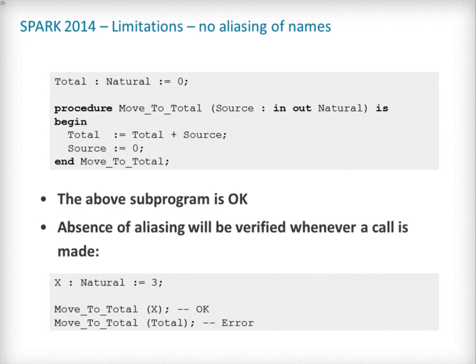The example subprogram move_to_total increases the global variable total by the value of its input parameter source, and then resets source to zero. Here, the programmer has not taken into account the possibility of aliasing between total and source — this is fairly common practice. This subprogram is valid Spark, and for its verification, the Spark 2014 tools assume, like the programmer, non-aliasing between total and source. To ensure that this assumption is correct, the tool will then check for non-aliasing on every call to move_to_total.